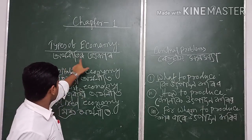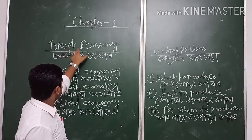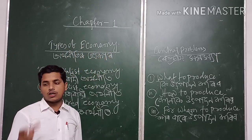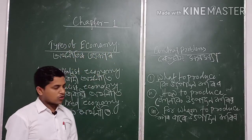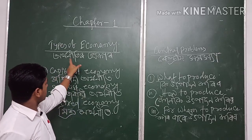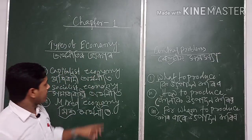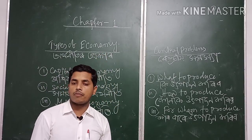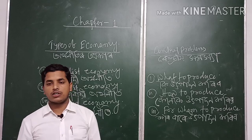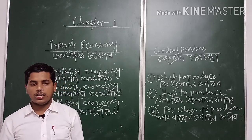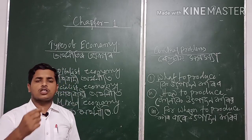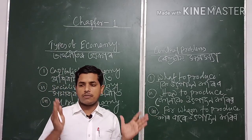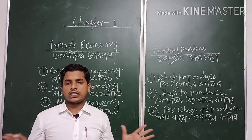To start understanding types of economy, you have to know what is meant by an economy. The economy refers to the aggregate of all economic activities within a geographical boundary and within a geographical area. In terms of a geographical area and geographical boundary, the economic activities include production, consumption, and distribution.